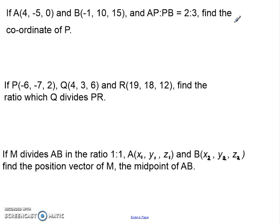And the third one: if I have got a line AB and it's divided in the ratio of 1 to 1 by a point M, and I'm telling you that A and B have generic coordinates of X1, Y1, Z1, and X2, Y2, Z2, I want you to find the position vector of M, which is the midpoint of that. So, pause the video and have a crack at them.